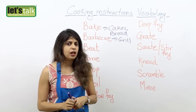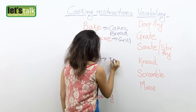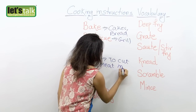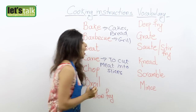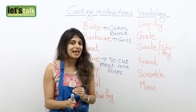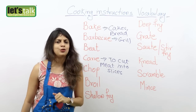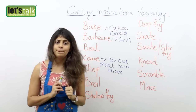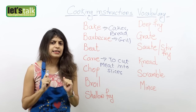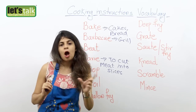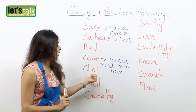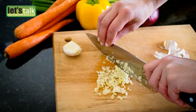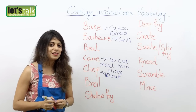Then we have carve. Carve means to cut meat into slices. That's a better word rather than just saying cut your meat — the better word to use is carve your meat. Another one is chop. You might have seen when getting a recipe online, it will always say chopped vegetables or chopped onions. Chop means to cut your veggies into small pieces.